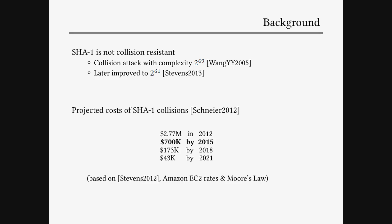Schneier predicted that in 2012 it would cost about almost 3 million, but it would drop to around $700,000 by today, and by 2021 it would drop to $33,000 by just renting computing power on Amazon EC2.